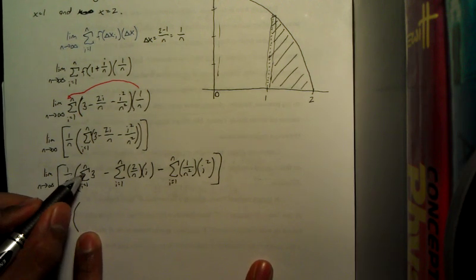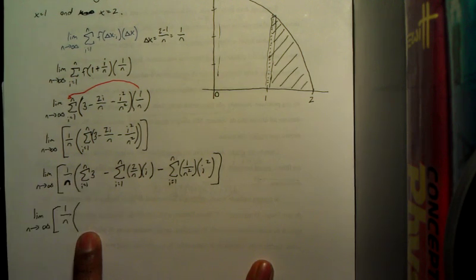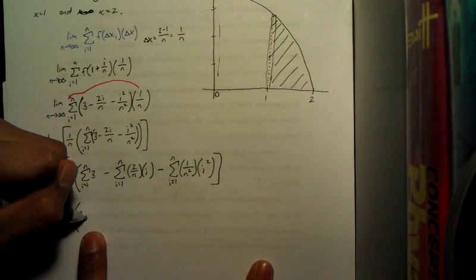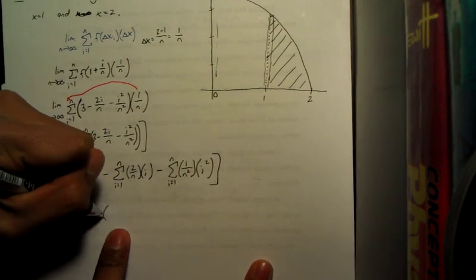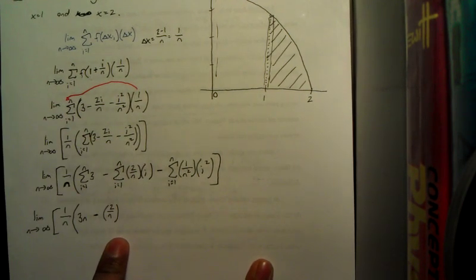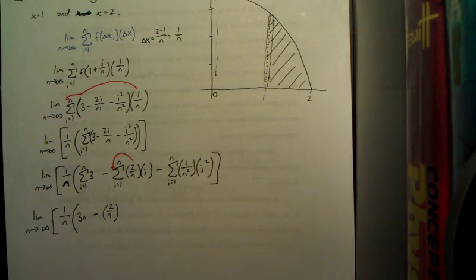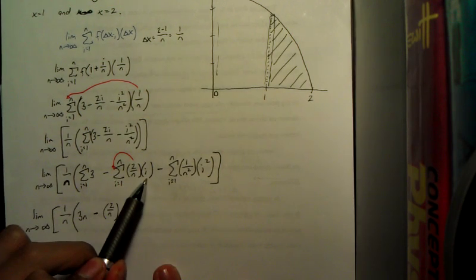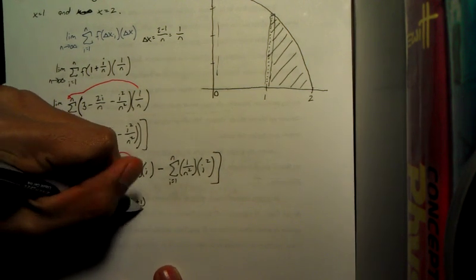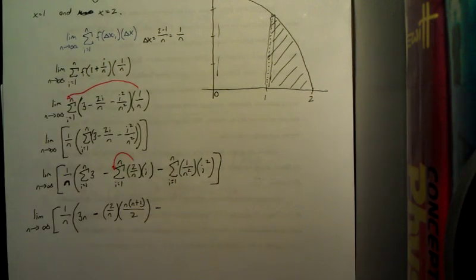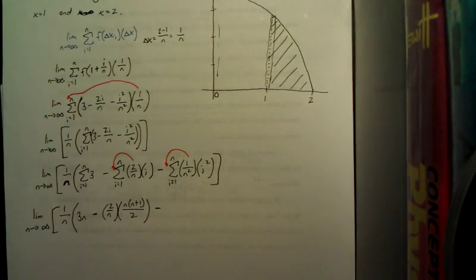This first one, when you have the summation with n on the top and a constant as your function, you just do the constant times n. Minus, we're going to have 2n because really you could just bring this out in the front right there. And then when you've got the summation of i, that comes out to be n times n plus 1 over 2. Minus, and then like we did with this one, you can bring this one out into the front right there.